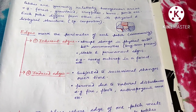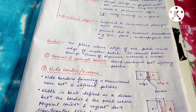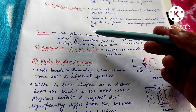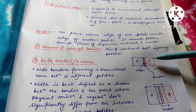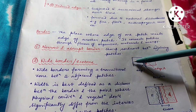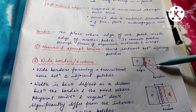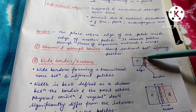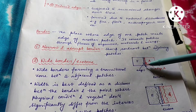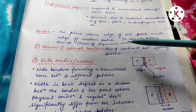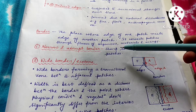Now, what is a border? A border is the place where the edge of one patch meets the edge of another patch. For example, a forest patch and an agricultural field patch each have four edges, and where the edges of both patches meet, the structure formed is known as the border. The border connects patches through fluxes of organisms, materials, and energy — organisms can pass from one patch to another through the border, along with energy and materials.